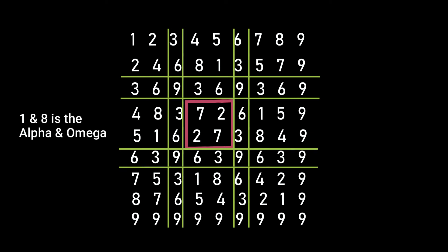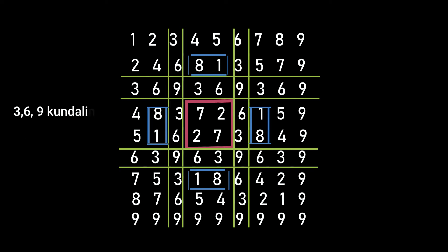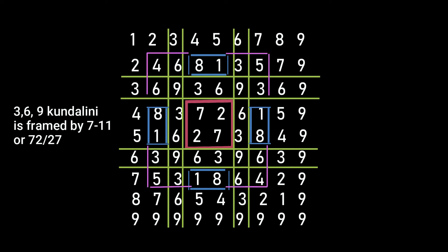1 and 8 is the alpha and omega. The kundalini grid is framed by 7 and 11 — that is, 7, 2, 2, 7; and 6, 4, 6 reduces to 7; and 3, 5, 3 is 11, or 2.